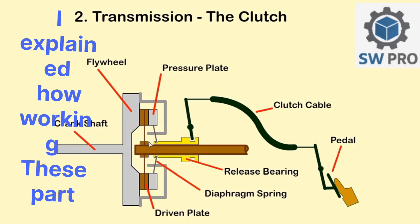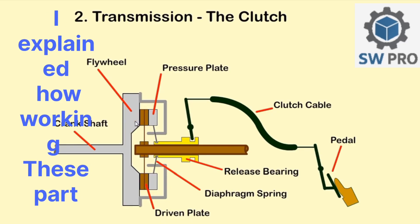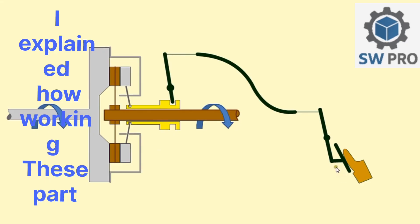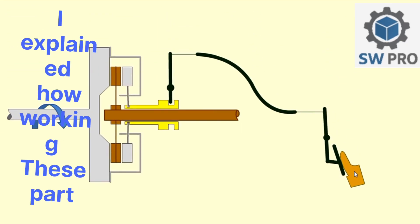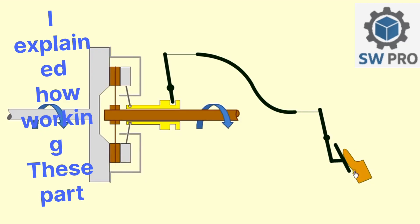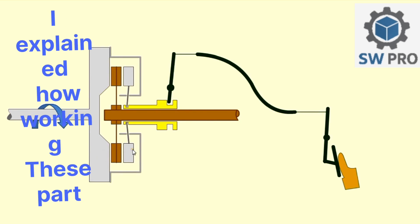Allowing the driven plate to rotate independently of the flywheel. We see when the clutch is pressed, the driven plate can move independently of the flywheel and pressure plate.